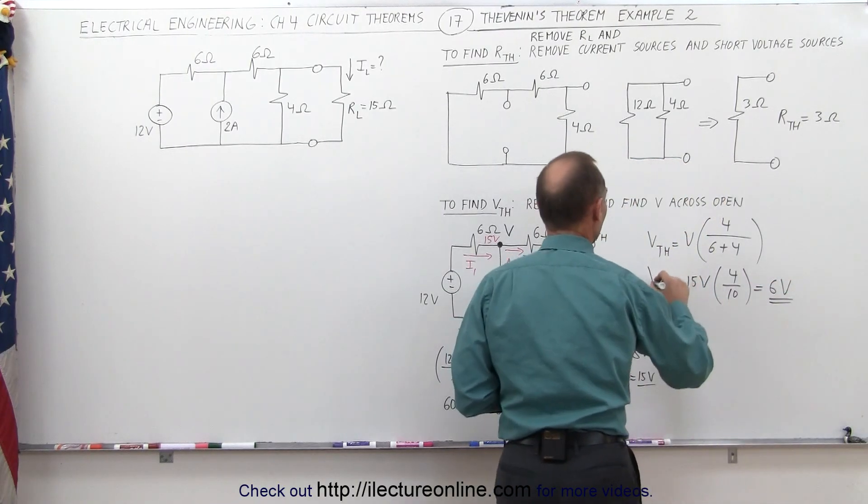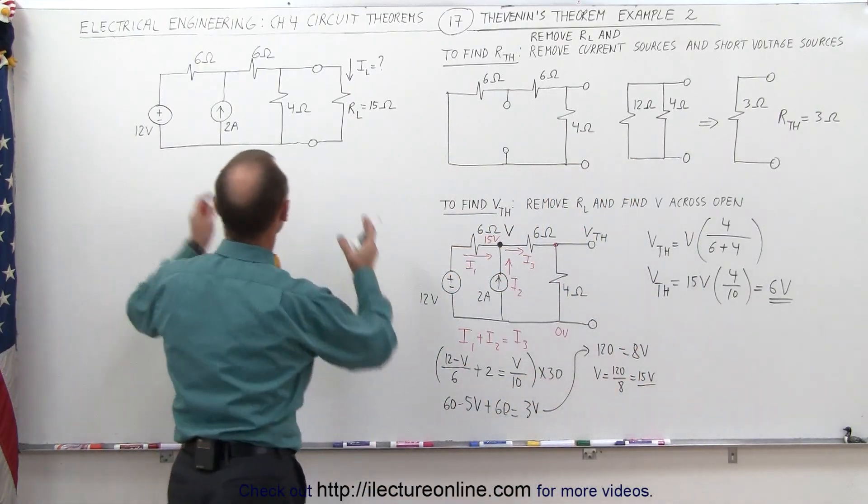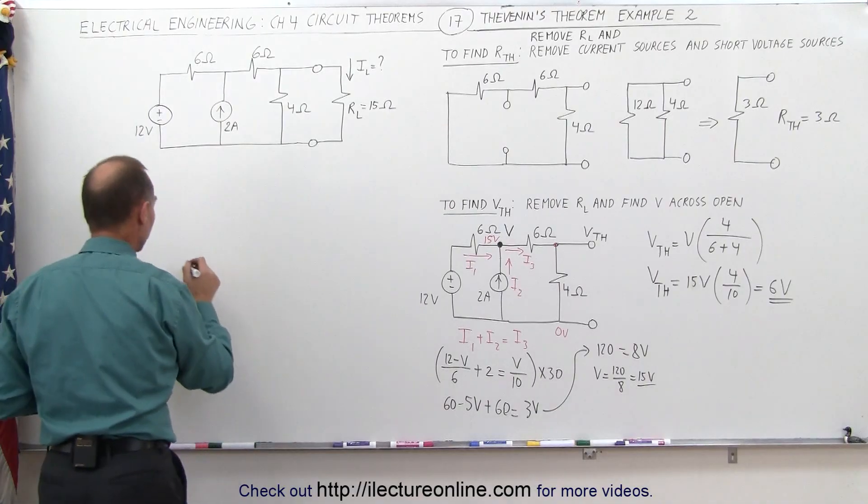The Thevenin voltage is equal to 6 volts, and the Thevenin resistance is equal to 3 ohms,